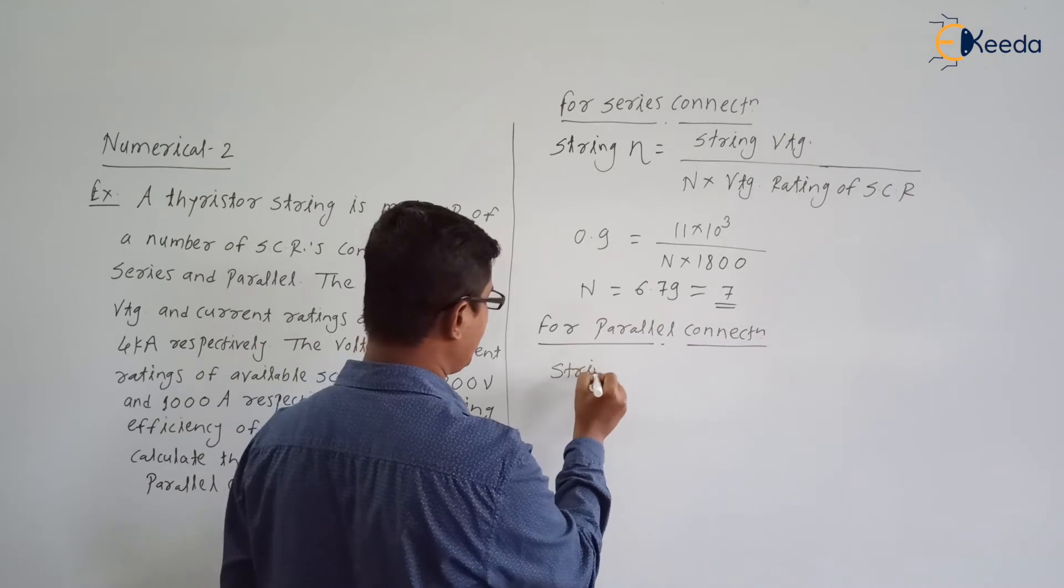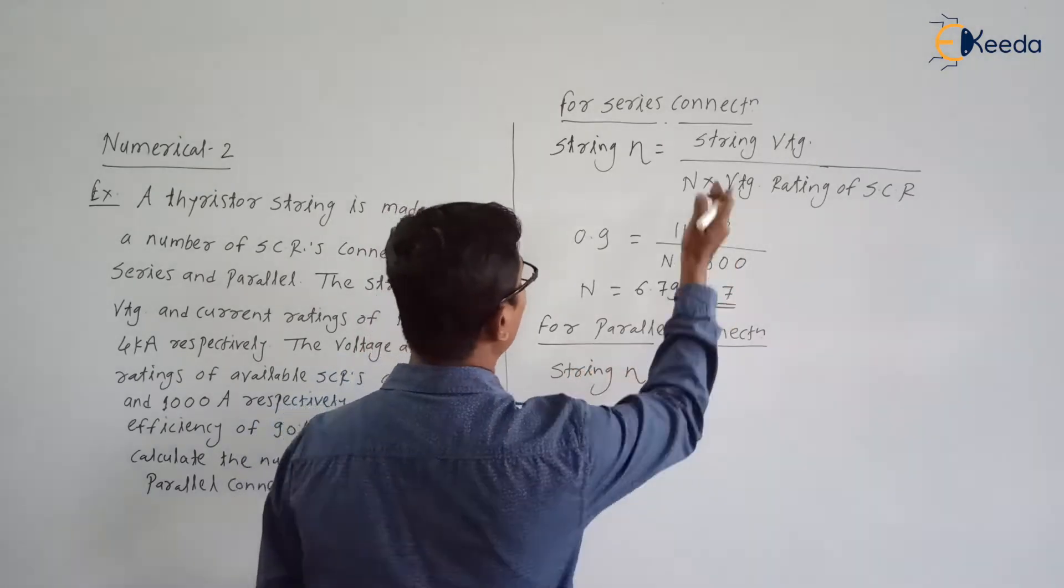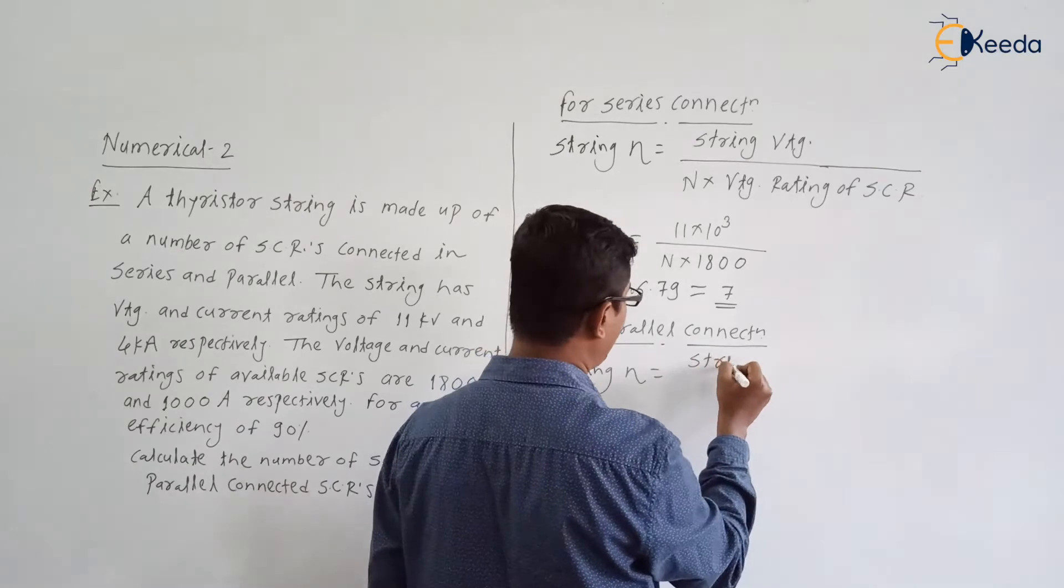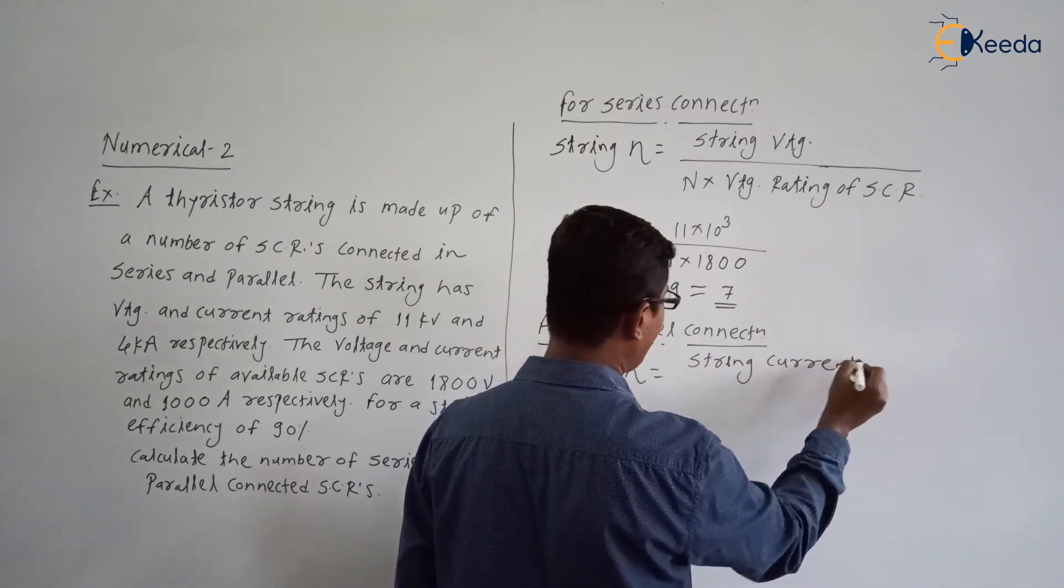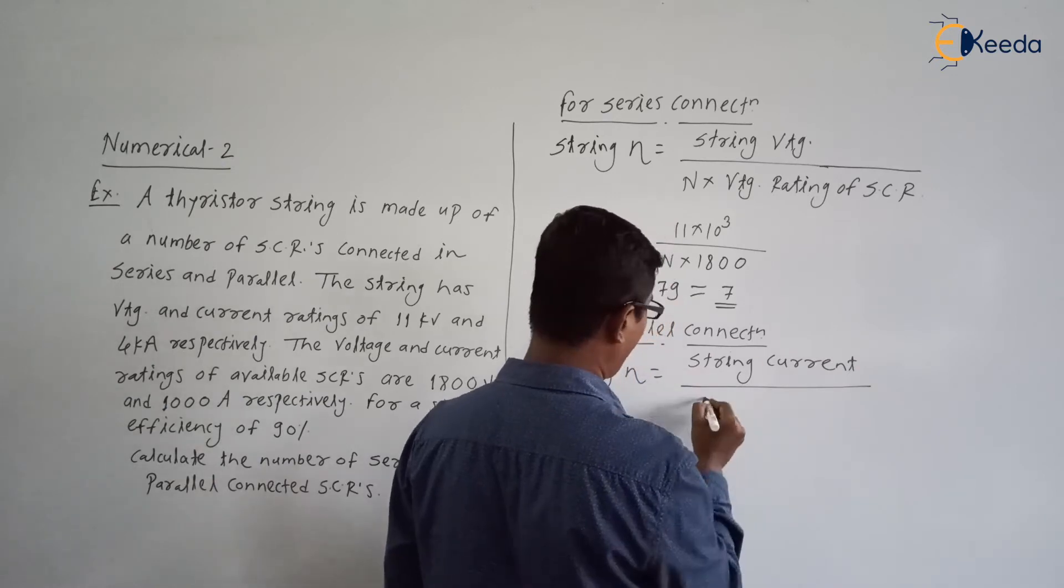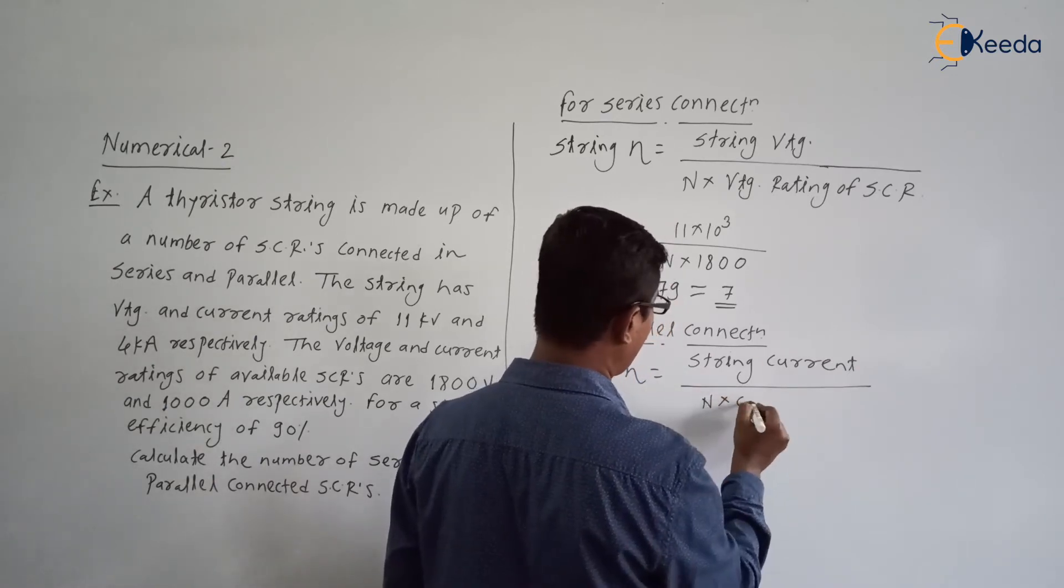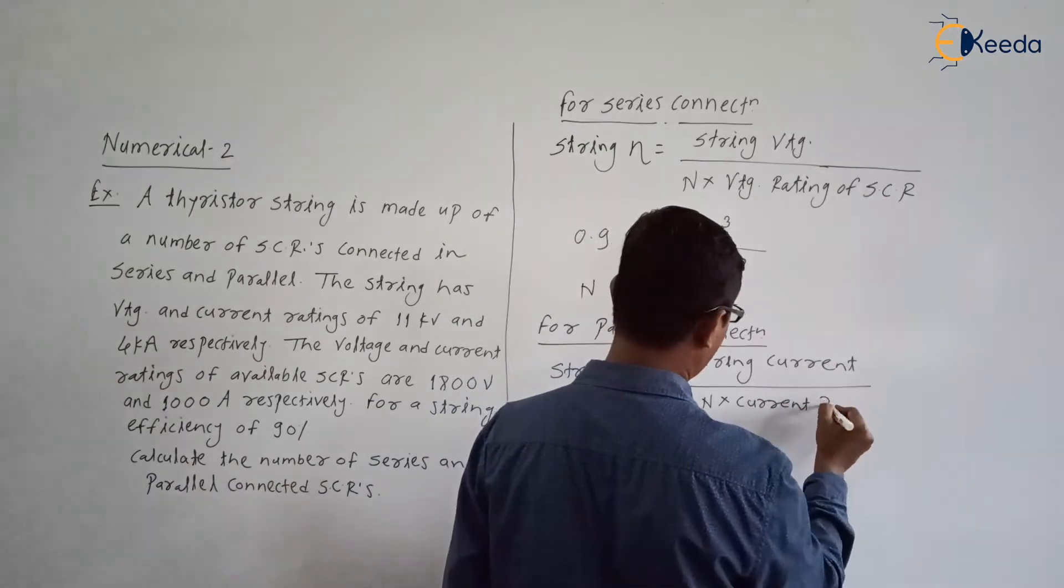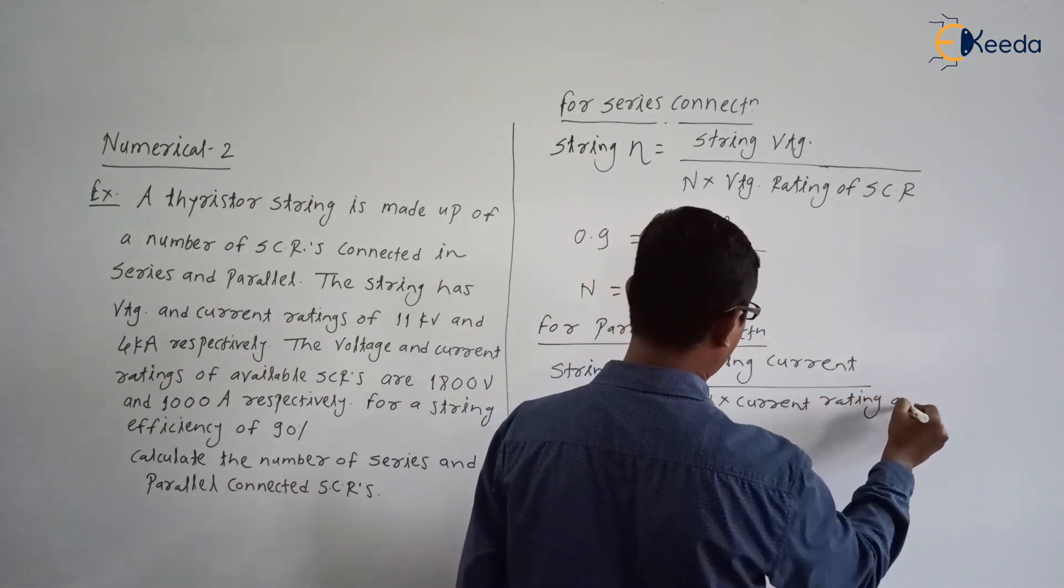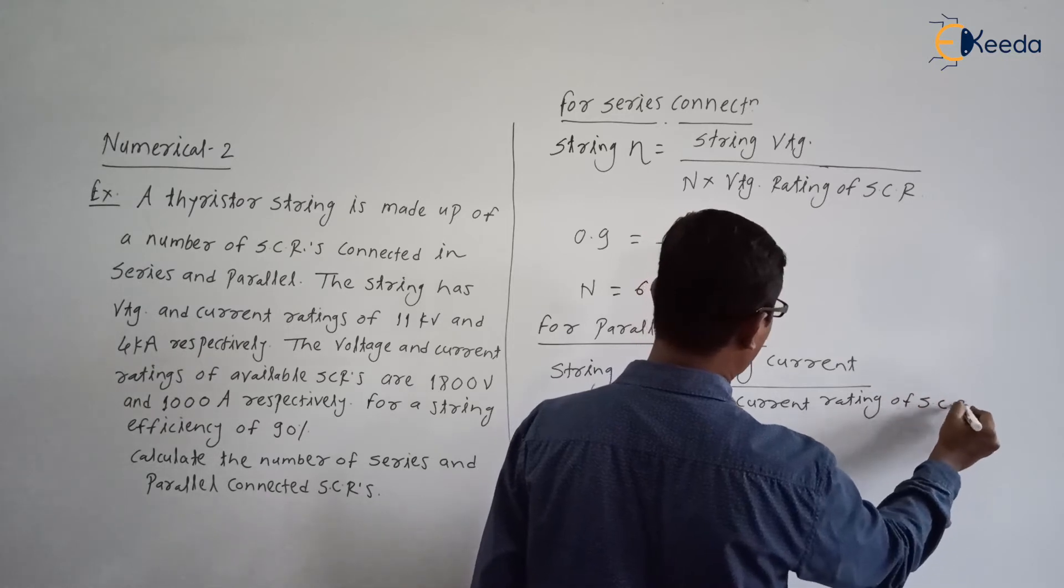Again the string efficiency is equal to what is the change? The string current rating divided by number of SCRs n into current rating of single SCRs. Are you getting the point?